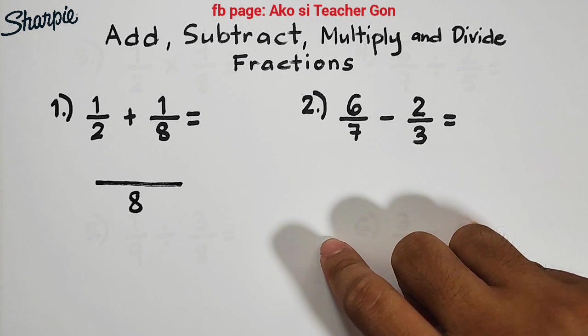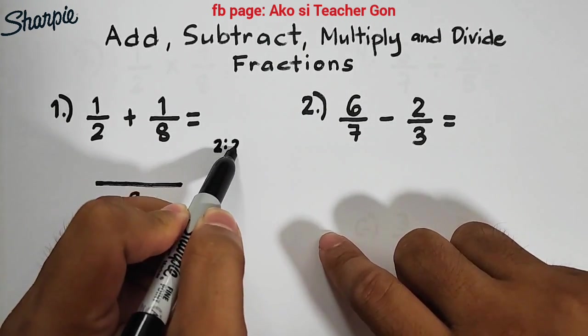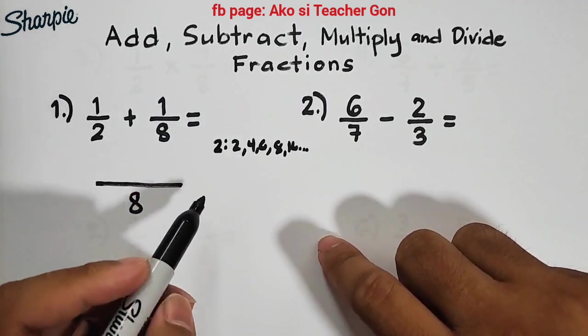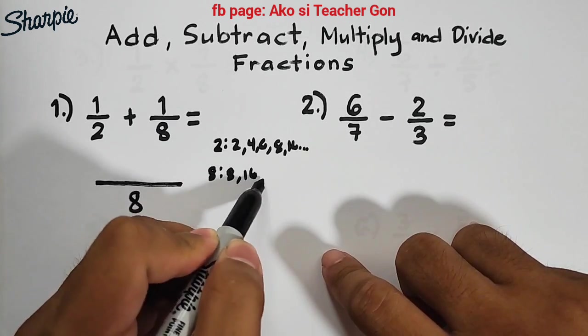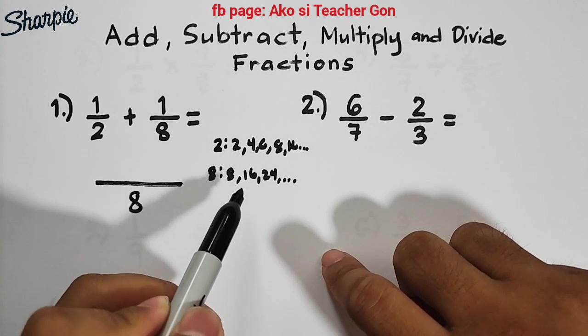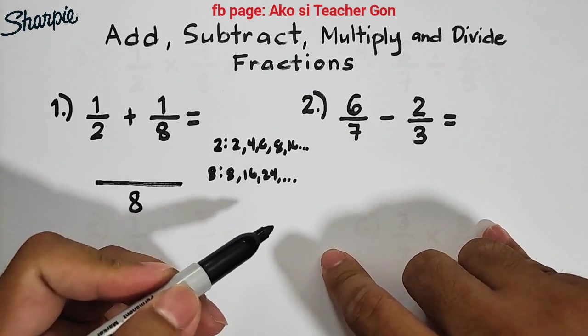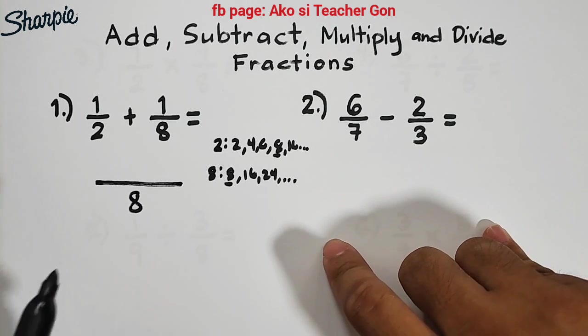How do we get the denominator or the least common denominator? You can use the listing method to get the LCM of 2 and 8. If you list them, it will become 2, 4, 6, 8, 16 and so on, and 8, 16, 24 and so on. As you can see, we have common multiples like 8 and 16, but we want the least common multiple which is 8. This LCM will serve as your LCD.